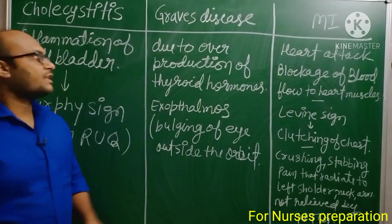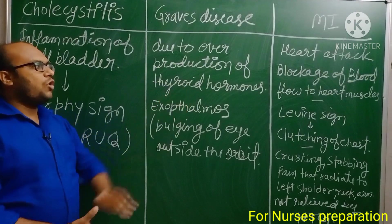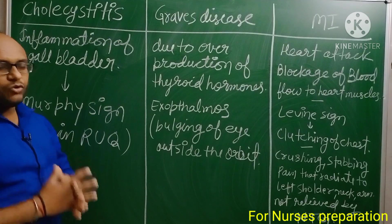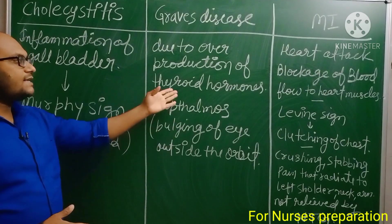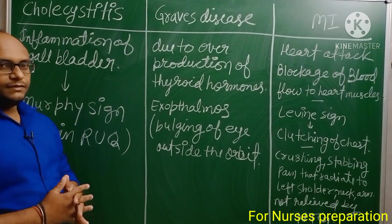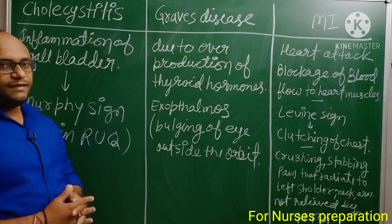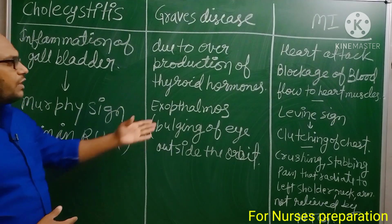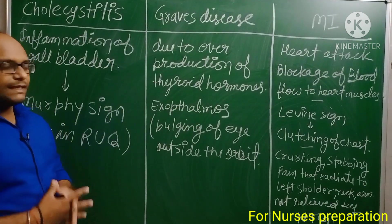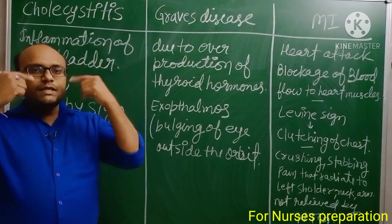The next disease is Graves' disease, which is due to overproduction of thyroid hormone — also known as hyperthyroidism. The thyroid gland is a butterfly-shaped gland situated in the neck region. The important symptom of this disease is exophthalmos — a condition in which the eyes bulge outside the orbit, making the person look as if their eyes are coming out.